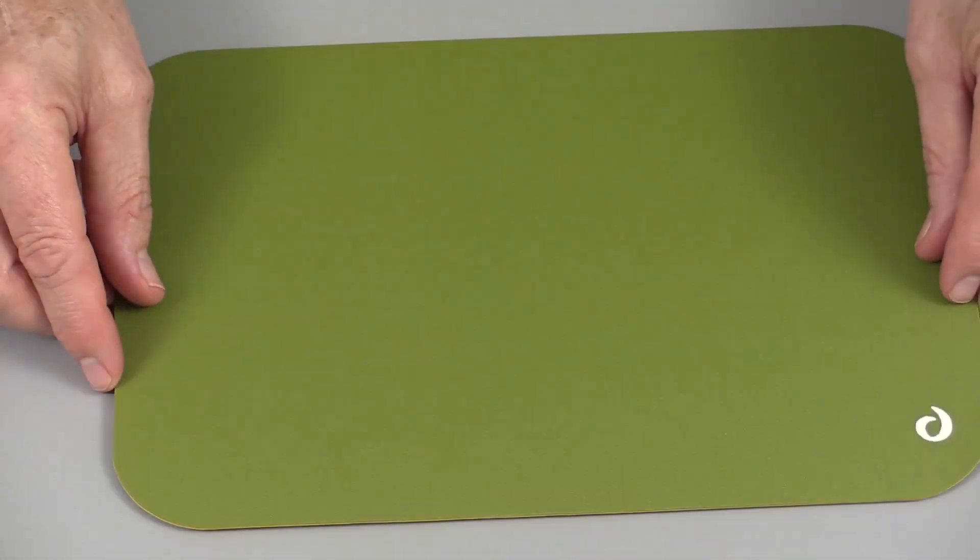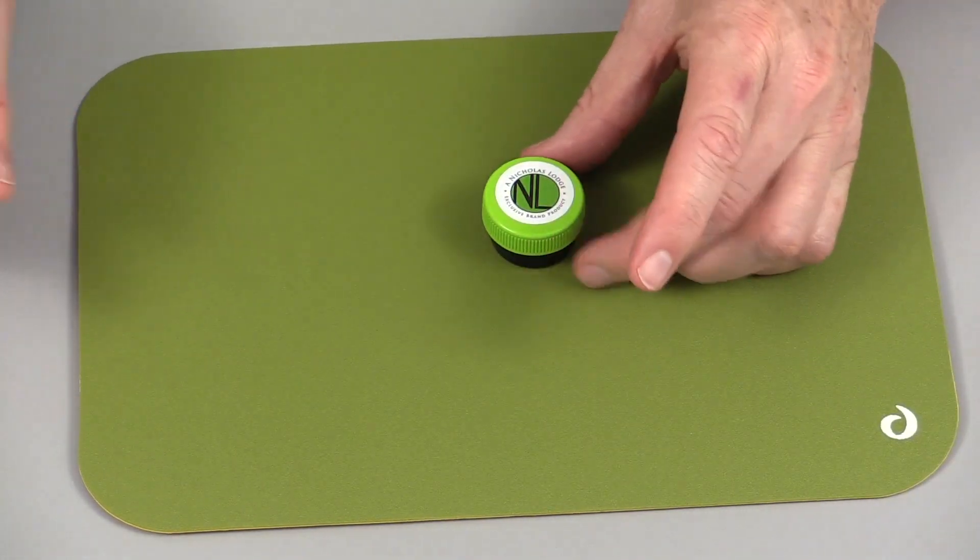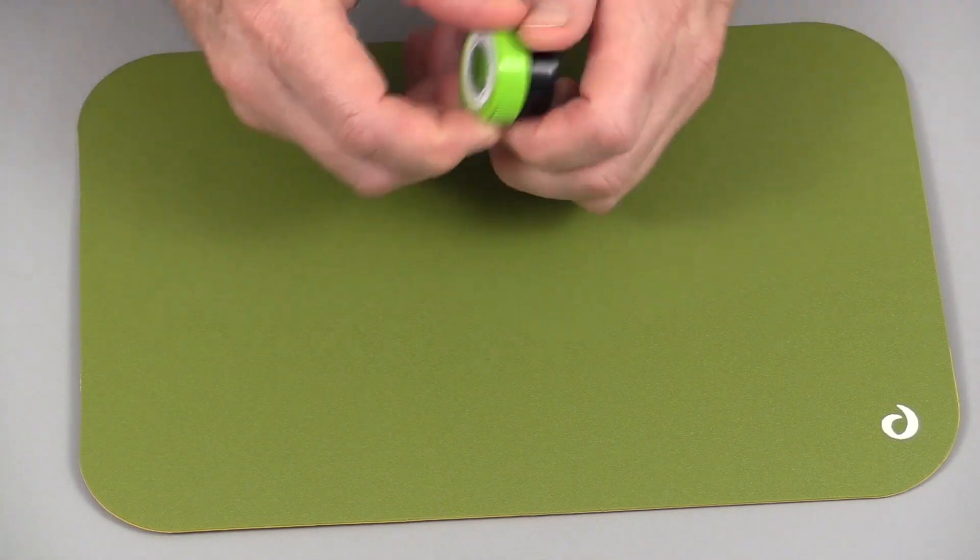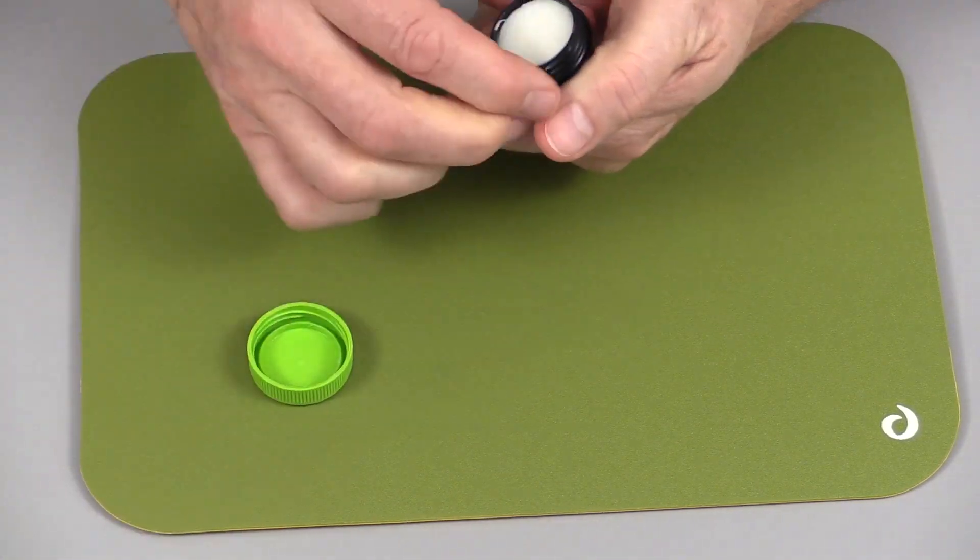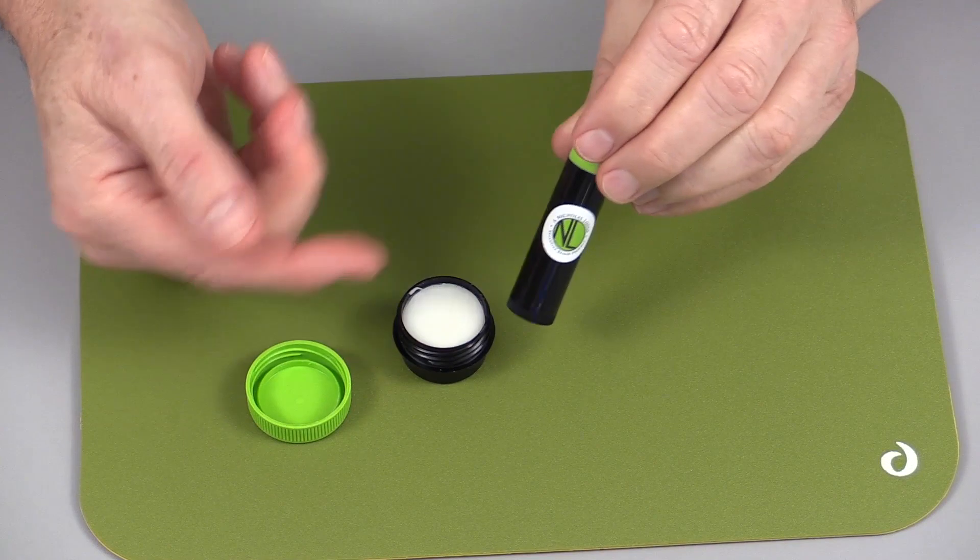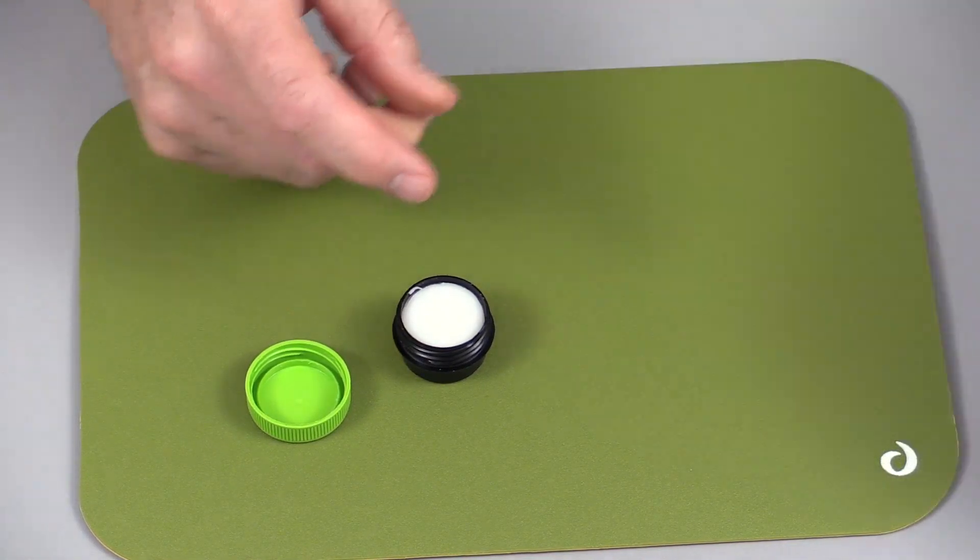Now the other option with the easy release is the little pot. This is the little pot of the same product. They're both exactly the same. Just the stick dispenser is very useful for going over the board.